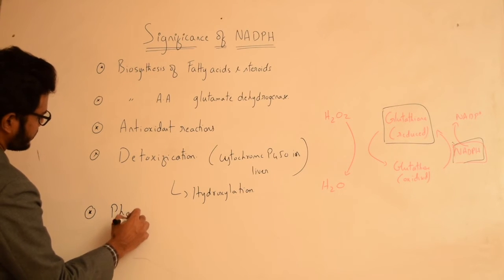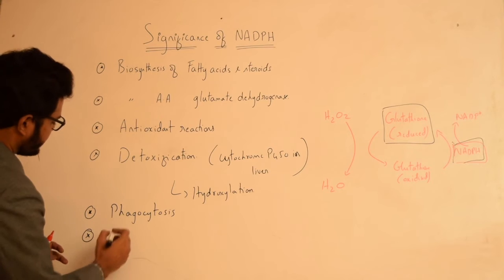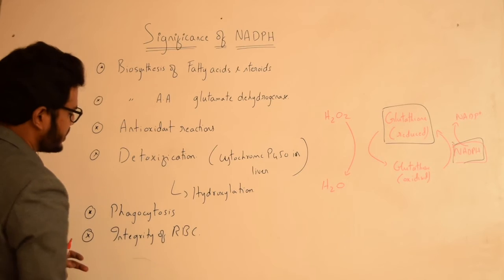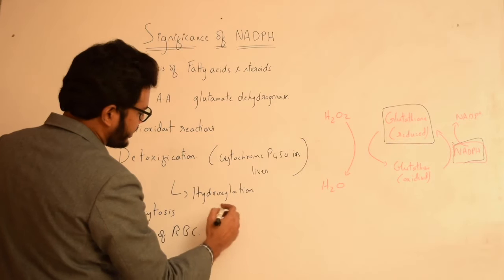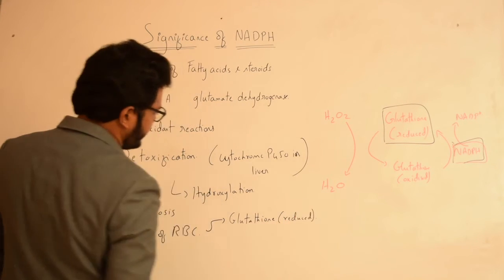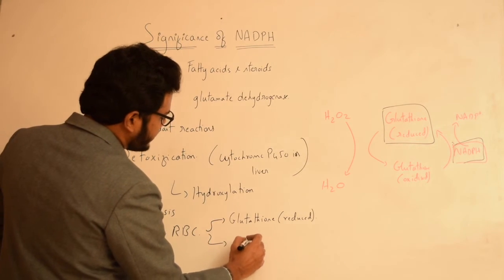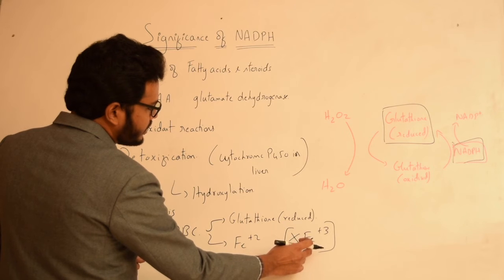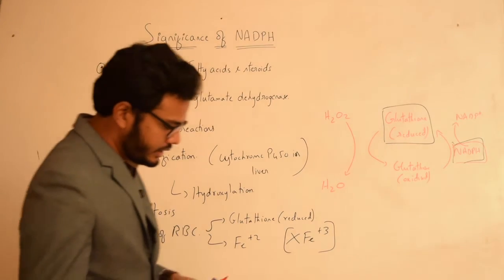NADPH also has a role in phagocytosis. Most importantly, NADPH maintains the integrity of RBCs — this is possible because the integrity of the RBC membrane is maintained by glutathione in its reduced state, which is kept reduced by NADPH. Additionally, the iron within hemoglobin is maintained in the ferrous state by reduced glutathione, preventing accumulation of methemoglobin.